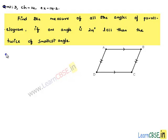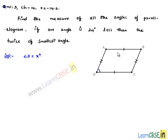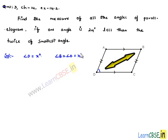Moving on to the solution. Let the smallest angle B and D be equal to x degrees. We know that in a parallelogram, opposite angles are equal, that is, angle B is equal to angle D, which is x degrees.